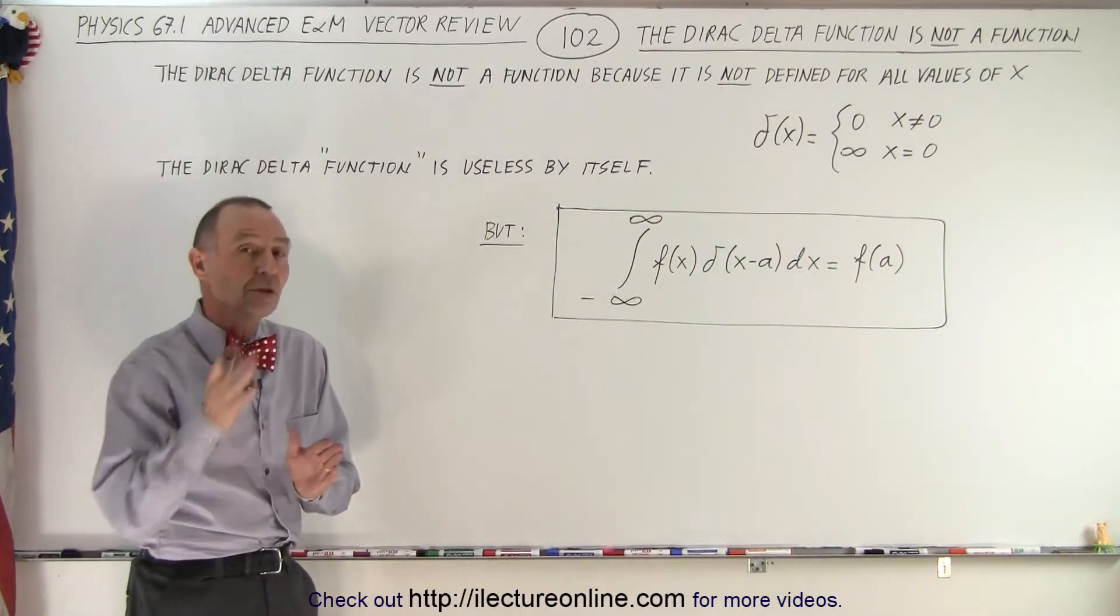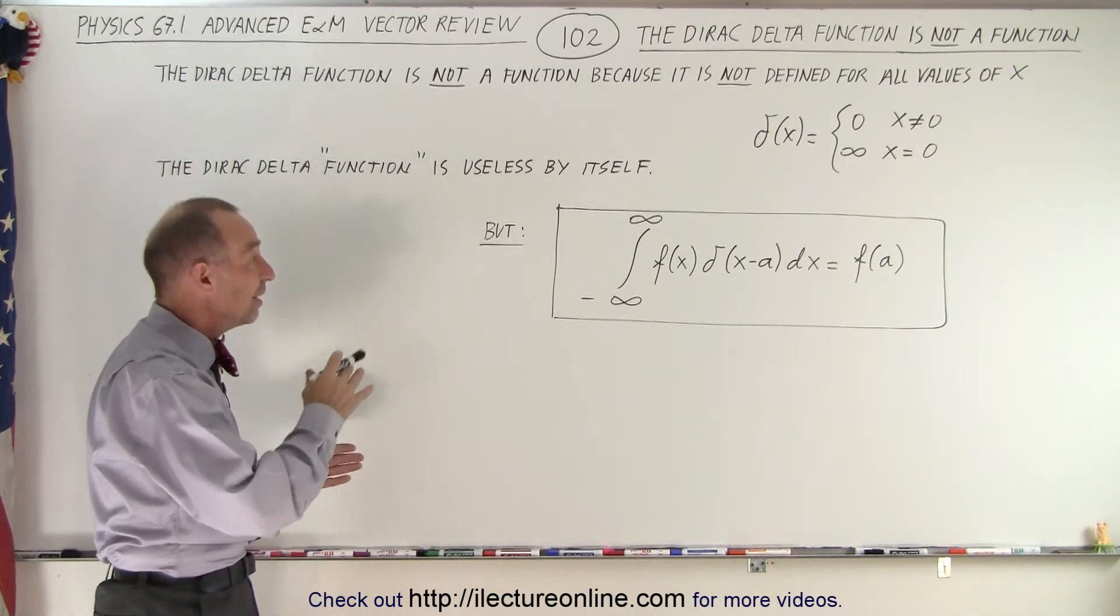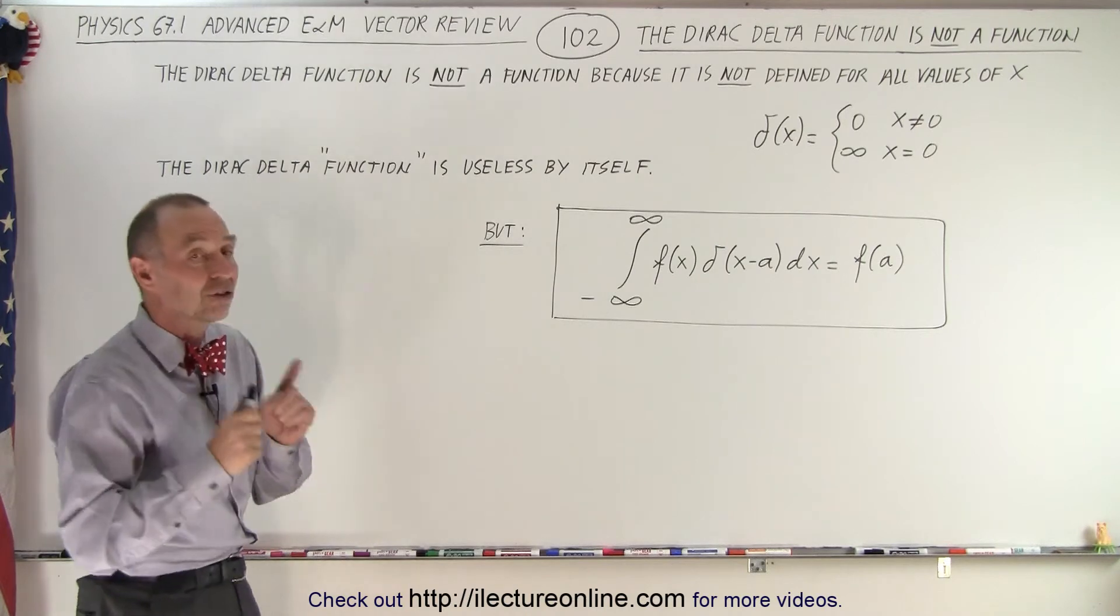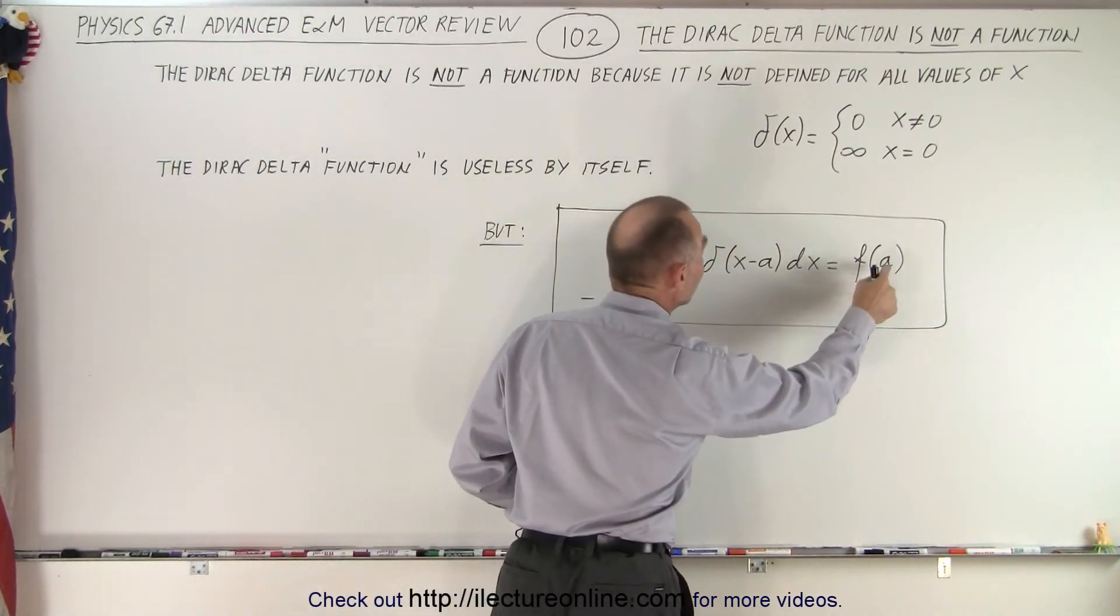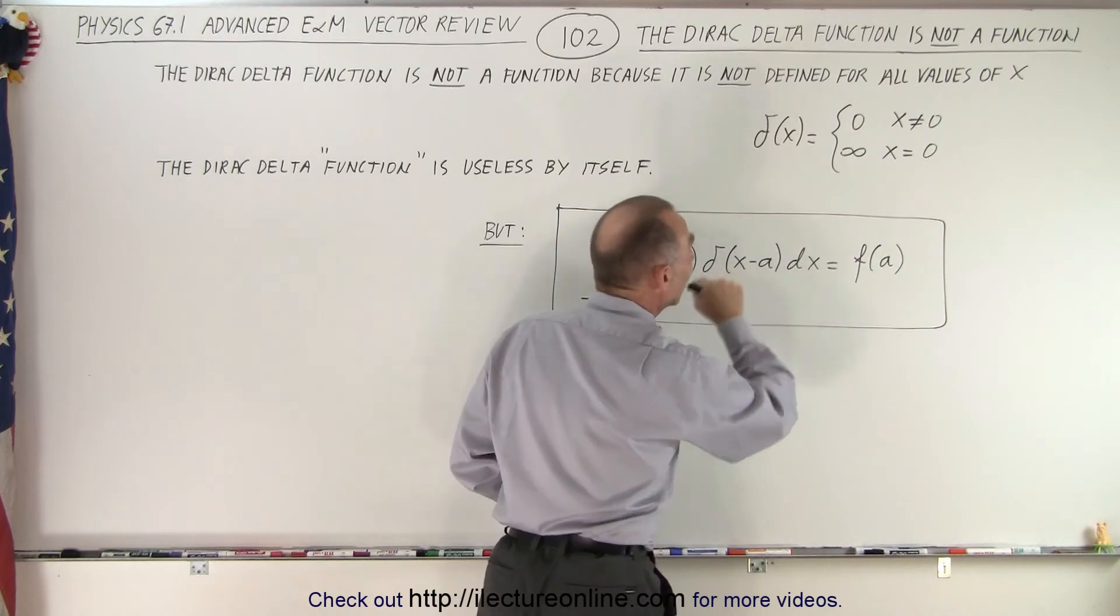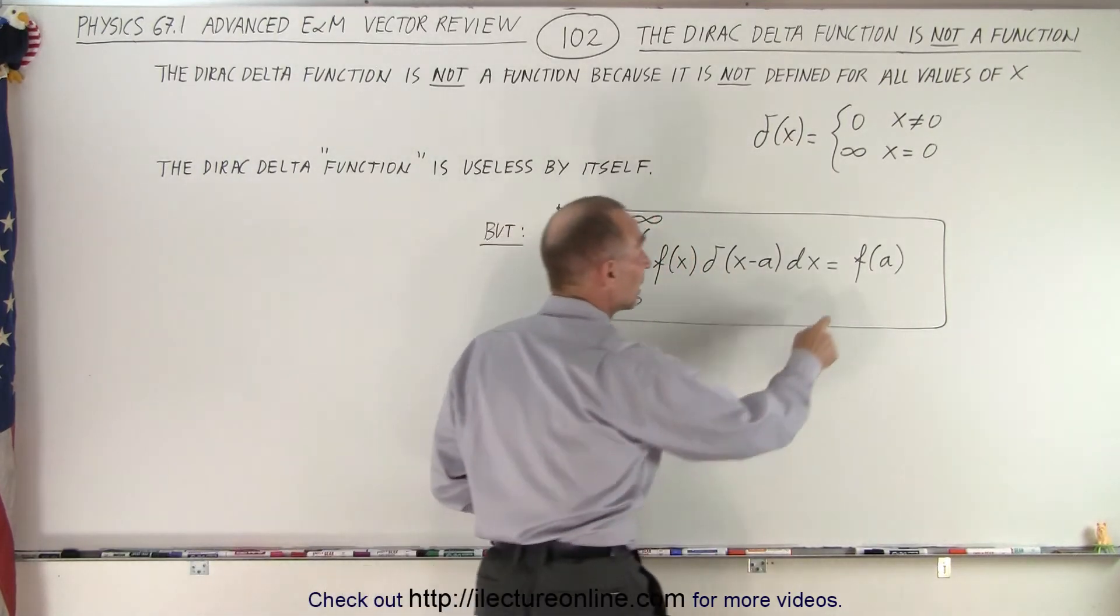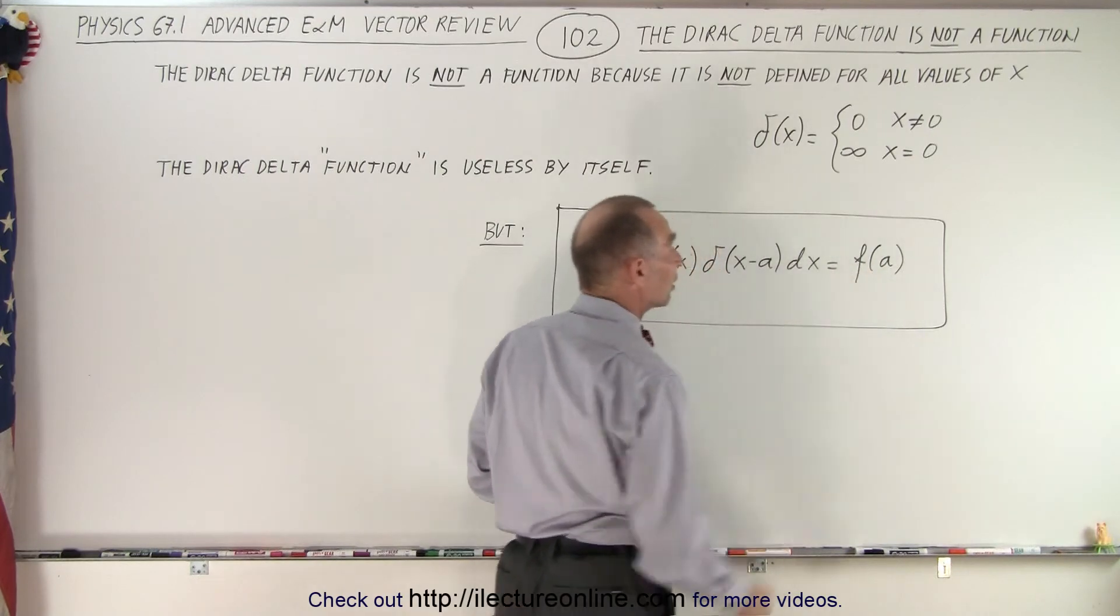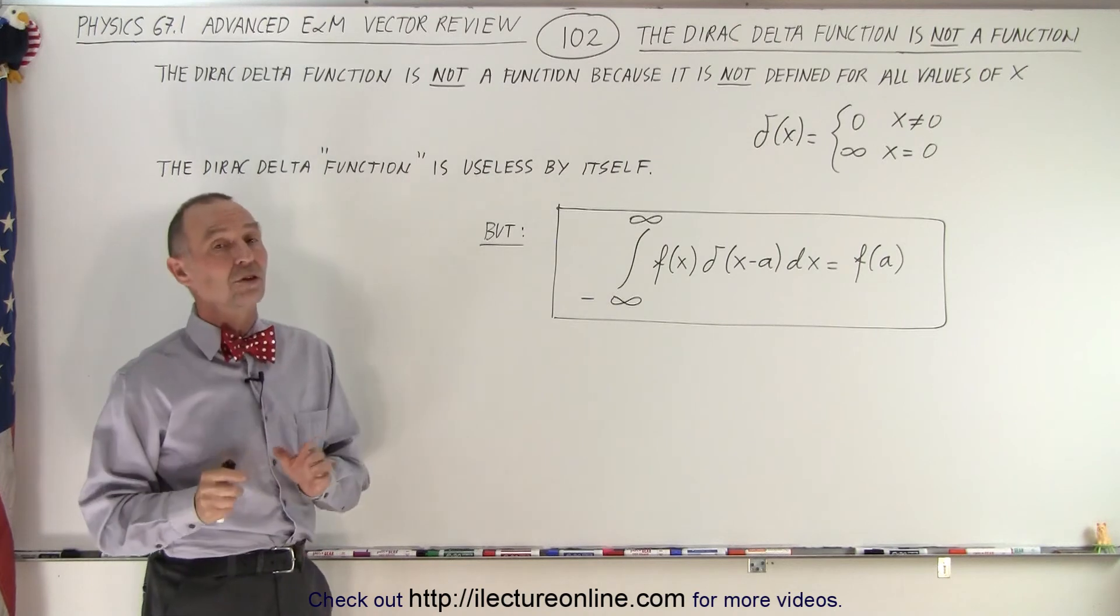And then you can see that that is equal to the function evaluated at x equals a. In other words, in an integral, multiply it with another function and integrate it from negative infinity to positive infinity, it actually gives us the value of that function for a particular value that's indicated in the Dirac delta function. x minus a, that means that we then get the value of the function at x equals a, and that's the key for the usefulness of the function.